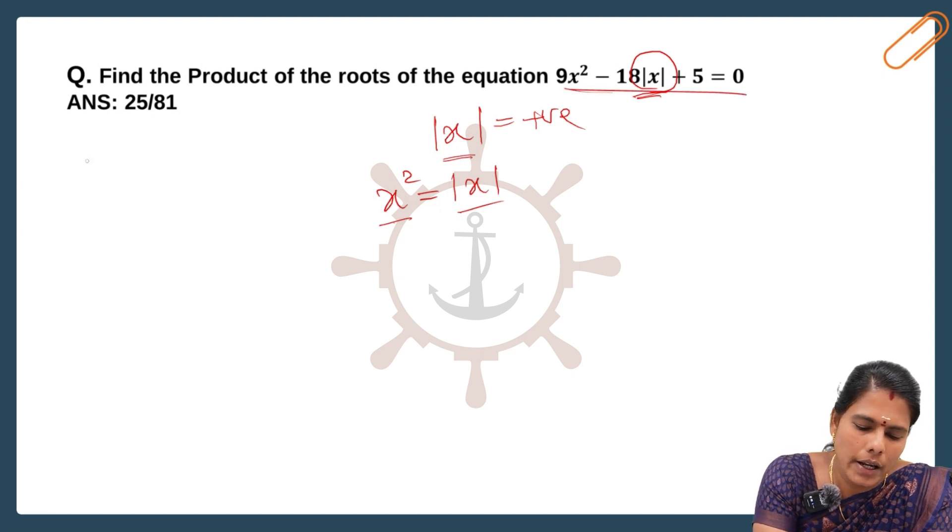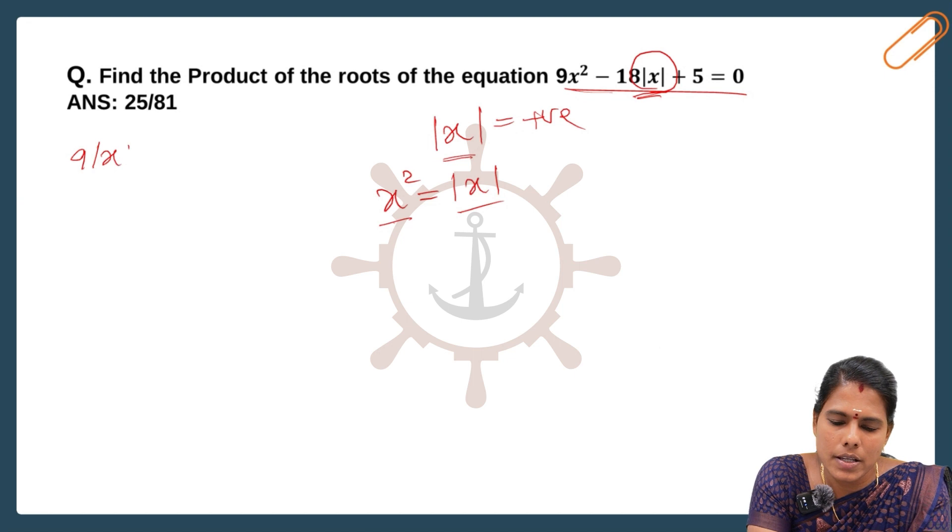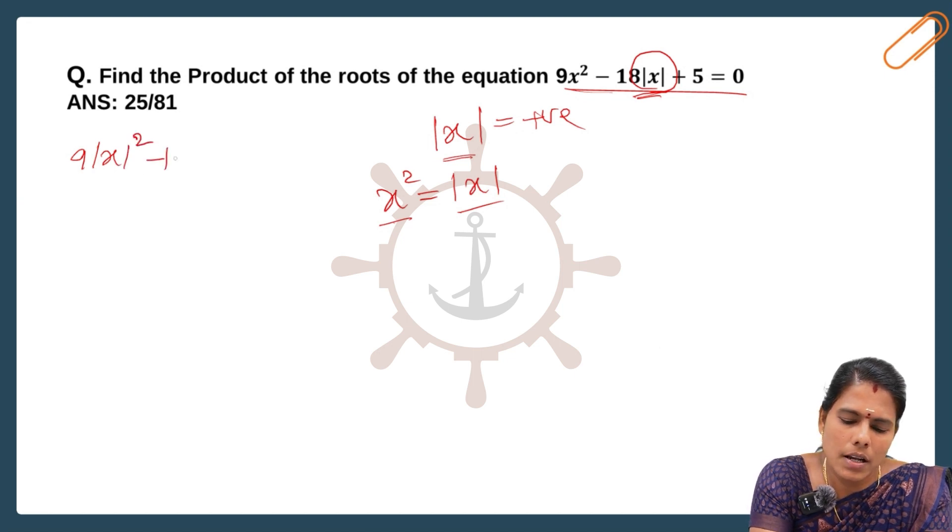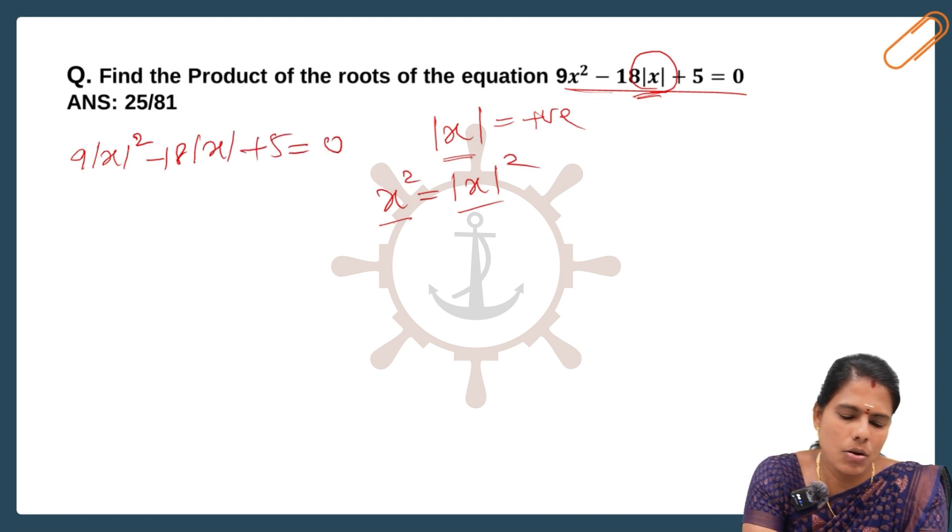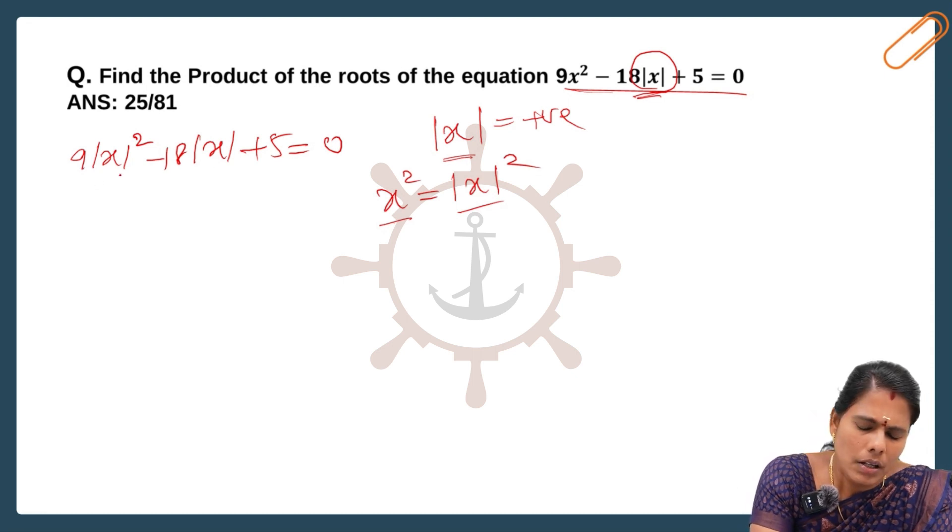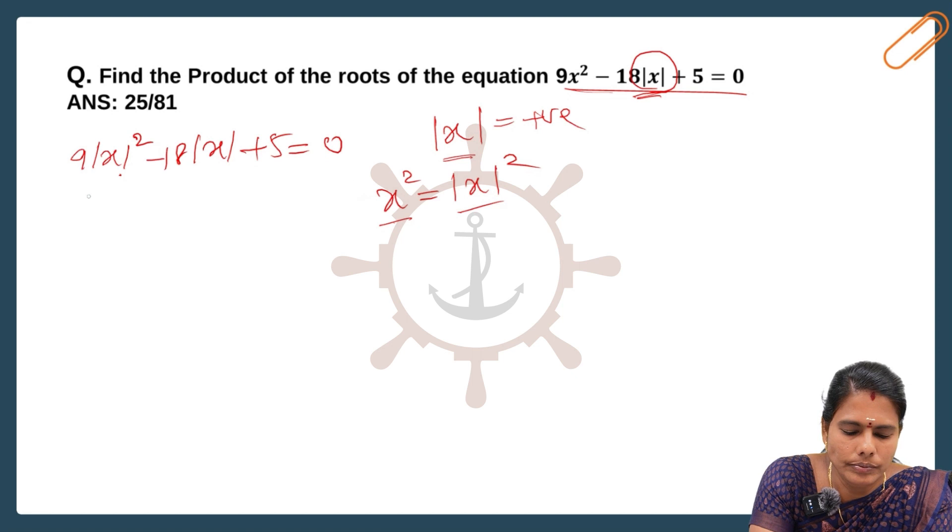So I can write the equation as 9(|x|)² - 18|x| + 5 = 0. Instead of x we are having modulus x in this equation. Now we can solve this.